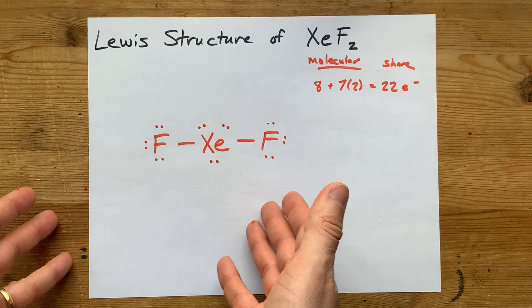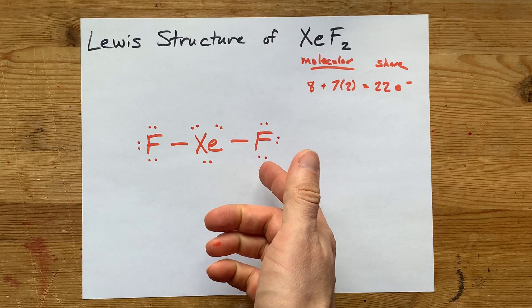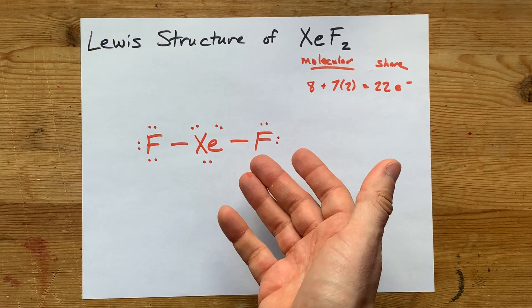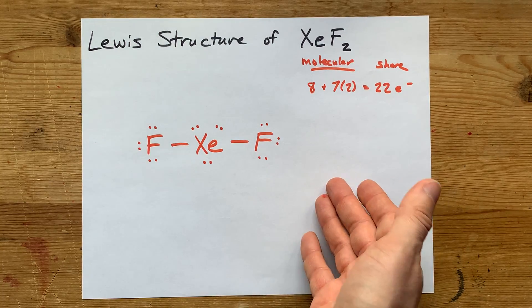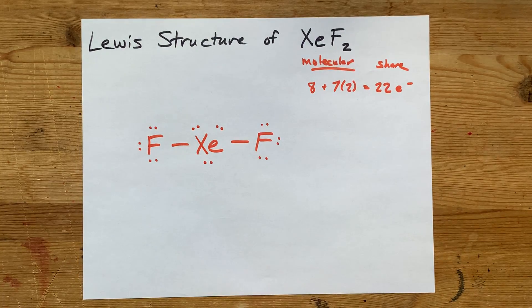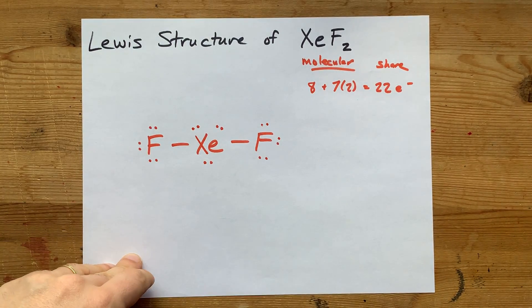This is it. There's nothing else to do. We've completed the octet on all of the atoms, and we had to expand the octet on xenon. I used up all the electrons, and I'm done. There's nothing else to do. You did it with me. Congratulations. I'm proud of you. Best of luck.